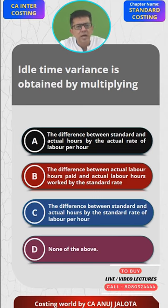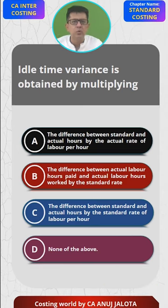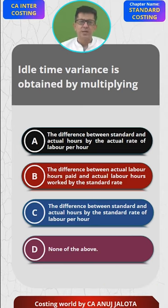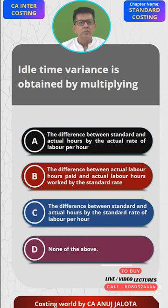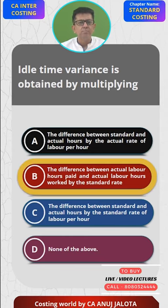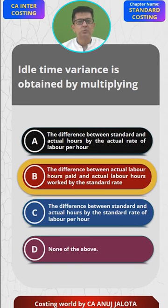You multiply idle hours by standard rate — that is how you arrive at idle time variance. So out of the four options, the answer should be B. That's the correct answer. Thank you.